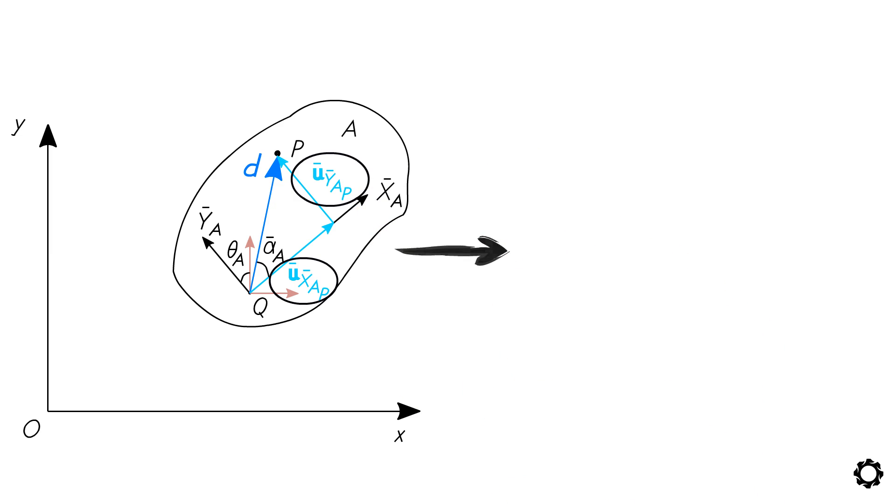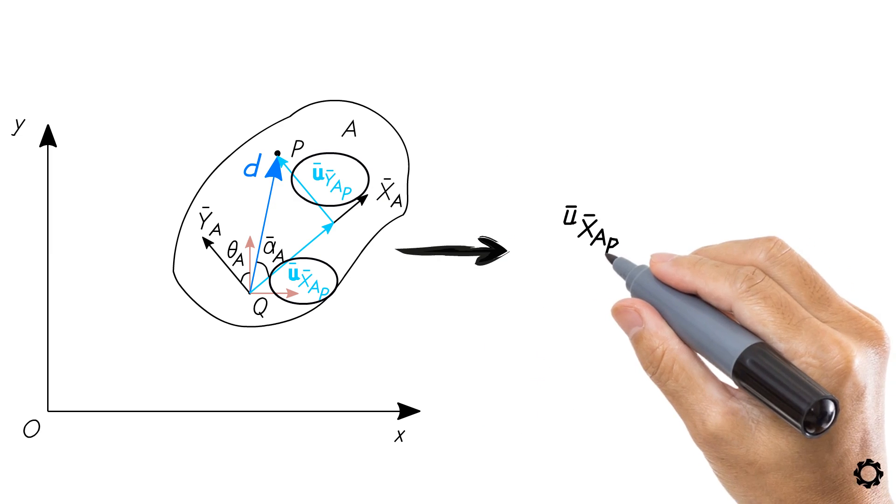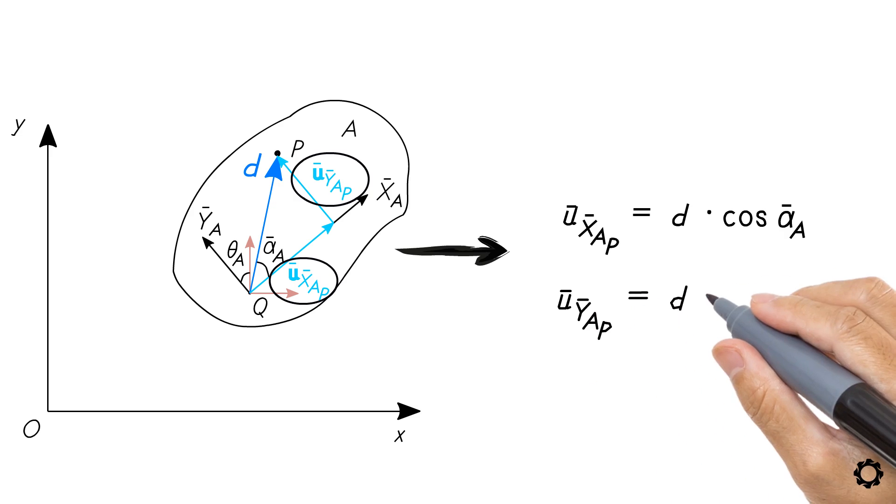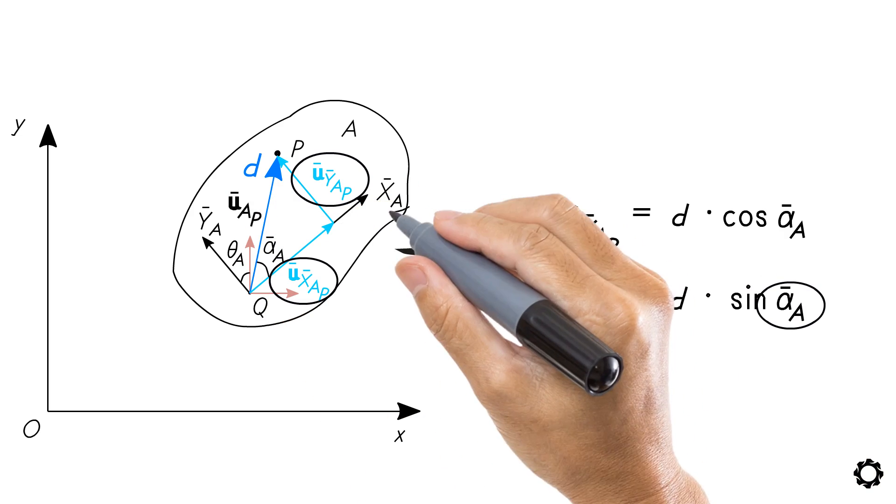Then we'll have u̅_x̅_ap equals d·cos(ᾱ_a) and u̅_ȳ_ap equals d·sin(ᾱ_a). Alpha bar a is the angle between vector u̅_x̅_a and x̅_a.